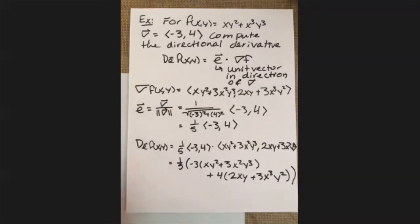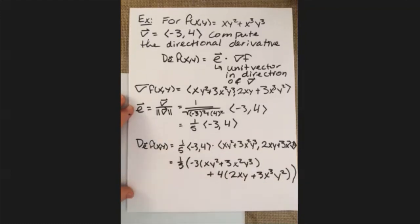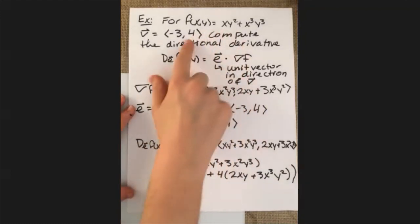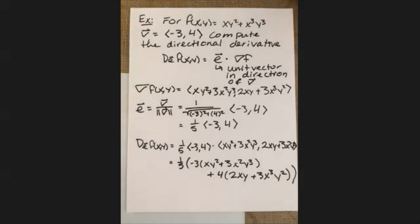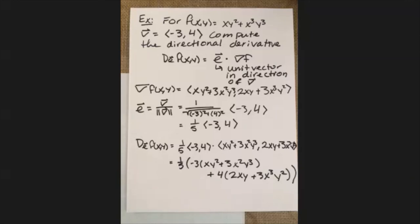So this is our answer for the directional derivative of f(x, y) in the direction of v = (-3, 4). In my next couple of videos, I'm going to go into a little bit more detail on some examples working with the gradient and also with the directional derivative. So for further clarification, please see those videos as well.